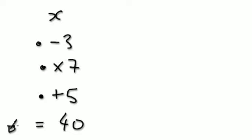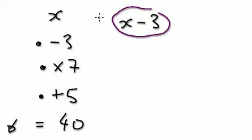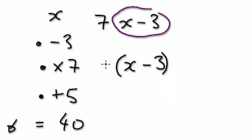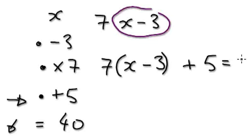Press pause and have a go. So I'm thinking of a number, x. I'm going to take away 3 — and then, I'm thinking of a number, I'm going to take away 3, and whatever the answer is, I'm going to multiply by 7. That's why we've got to use brackets here. I've got to work this out first, and then times by 7. That's why we've got to use brackets. And then I'm going to add 5. That equals 40.